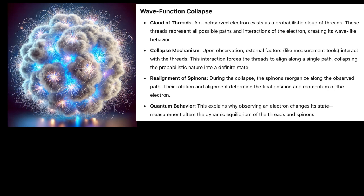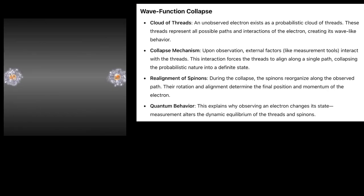Realignment of spinons: During the collapse, the spinons reorganize along the observed path. Their rotation and alignment determine the final position and momentum of the electron.